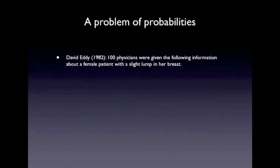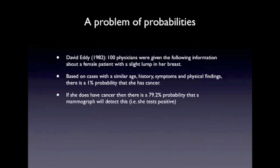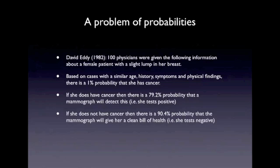We've got a female patient who presents with a slight lump in her breast. Based on cases with a similar age, history, symptoms and physical findings, there's a 1% probability that she has cancer. If she does have cancer, then there is a 79.2% probability that a mammograph will detect this — in other words, she tests positive. If she does not have cancer, then there is a 90.4% probability that the mammograph will give her a clean bill of health — in other words, she tests negative.